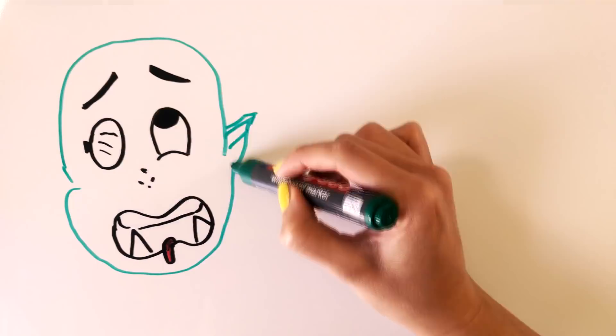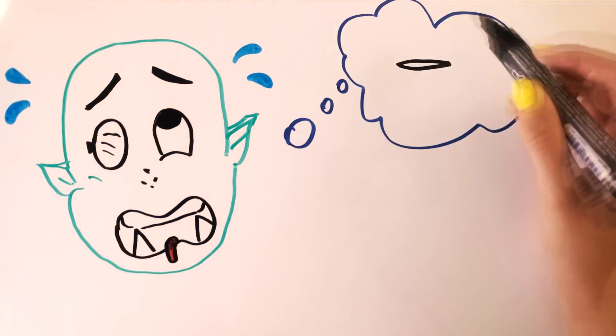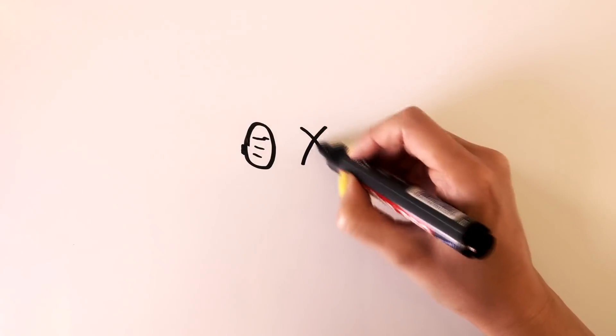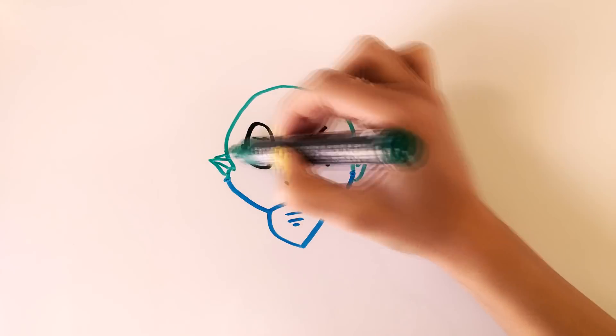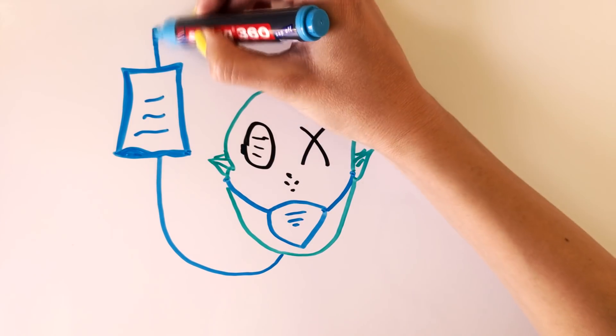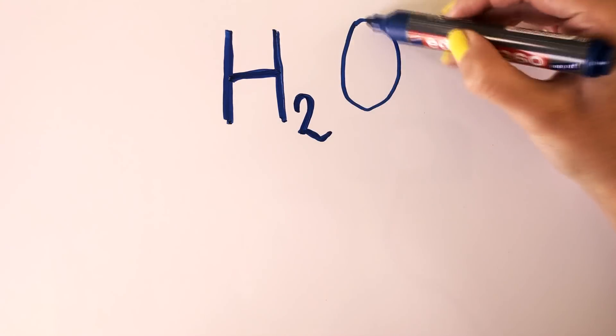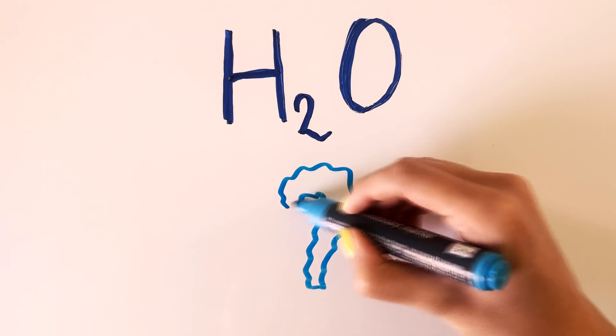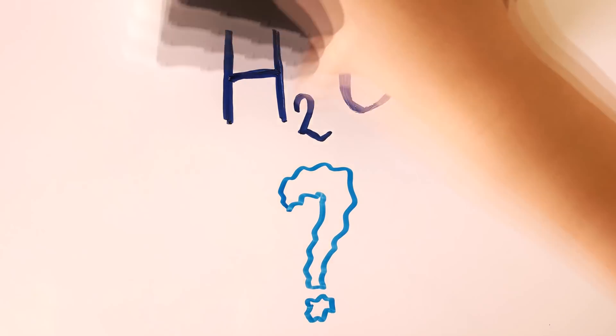When you are thirsty, it means that you are already dehydrated. Severe untreated dehydration can lead to a coma. Without water, humans can survive for only about 3 days. So we can say that water is pretty important for our body, but why is that so from a science perspective?